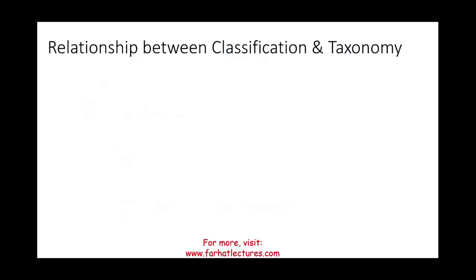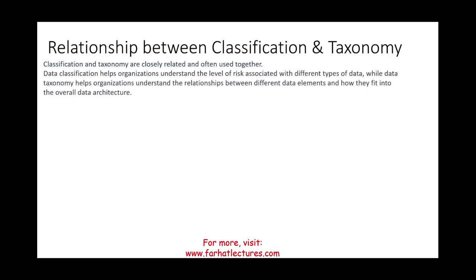You need to understand the relationship between classification and taxonomy. They are often interrelated and used together because you need to know what type of data you are dealing with and what its level of sensitivity is. Data classification helps the organization understand the level of risk associated with each data type, while data taxonomy helps the organization understand the relationship between different data elements and how they fit in the overall data structure.